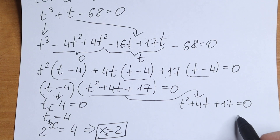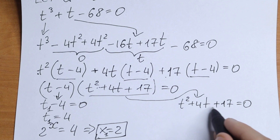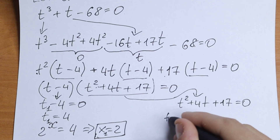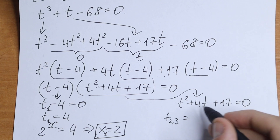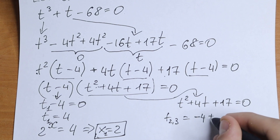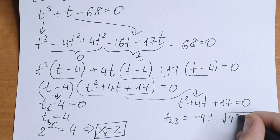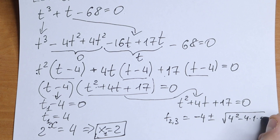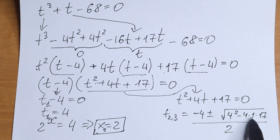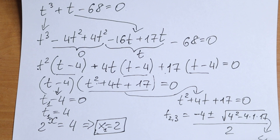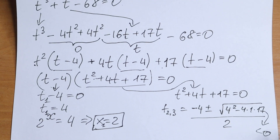We'll have the quadratic equation t squared plus 4t plus 17 equal to 0, to find t₂ and t₃. Let's solve this using the ABC formula — classic quadratic equation. We'll have minus b, which is minus 4, plus or minus the square root of 4 squared minus 4 times 1 times 17, all over 2. Take a look — this square root will be negative, because we'll have 16 minus a number larger than 16. So this discriminant is negative and as a result we'll have complex roots.